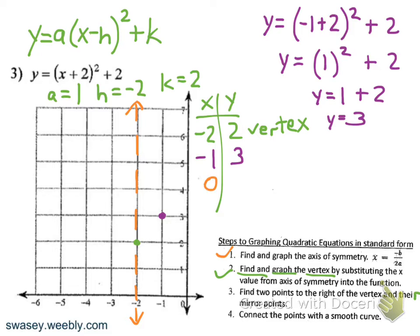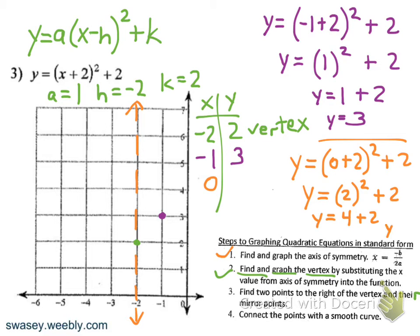Next, let's put in another value to the right of x of negative 2, and so now we're at 0. So y equals 0 plus 2 squared plus 2. Order of operations tells us to do what's inside parentheses first. 0 plus 2 is 2, and then 2 squared gives us 4. 4 plus 2 is 6. So we have a point at 0, 6, which happens to be the y-intercept, the place where our graph intersects the y-axis.